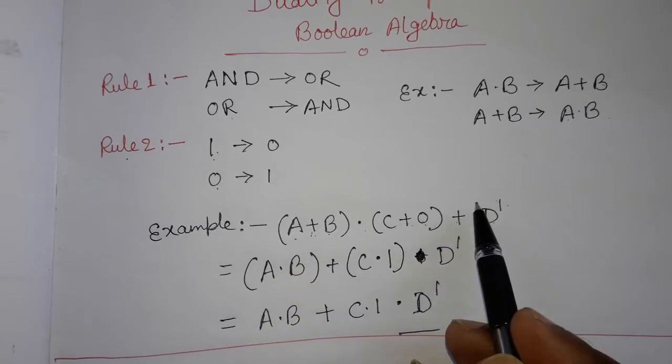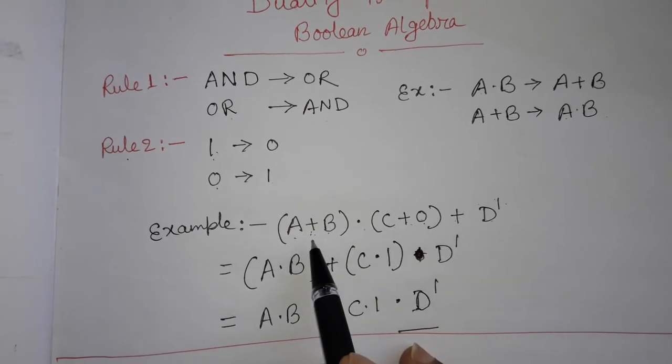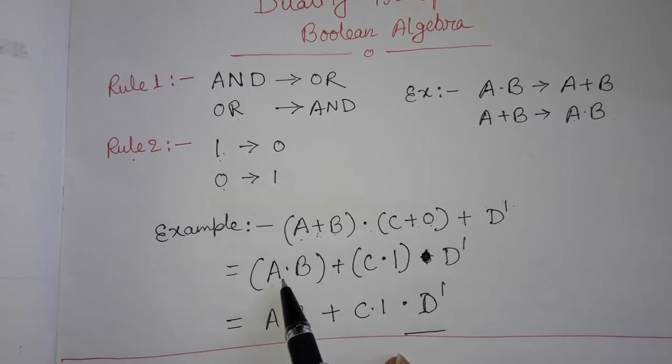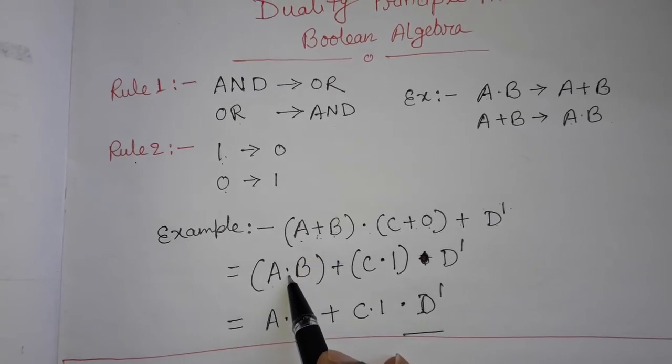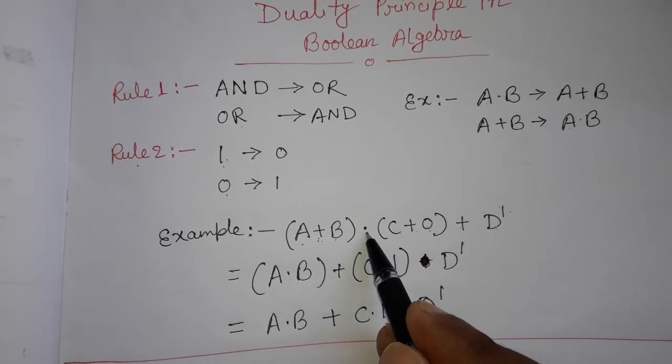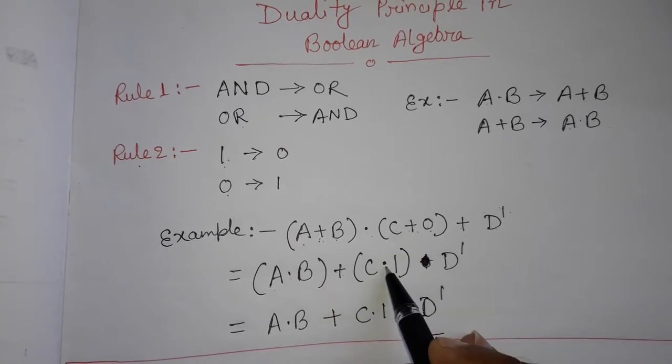When we will find out the duality of this expression, we will get A AND B. Instead of OR we will write AND, and instead of AND we will write OR. Similarly, instead of OR we will write AND.